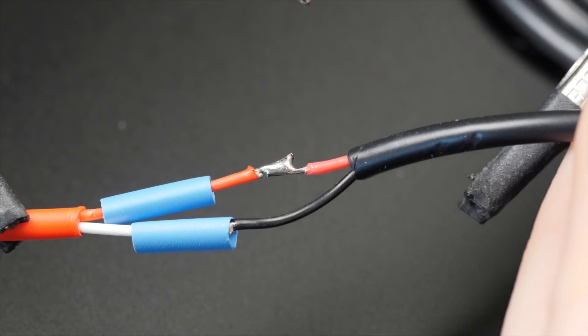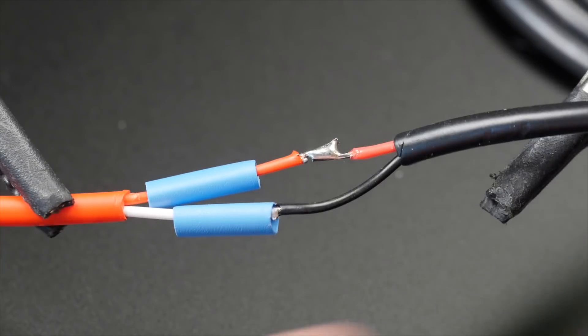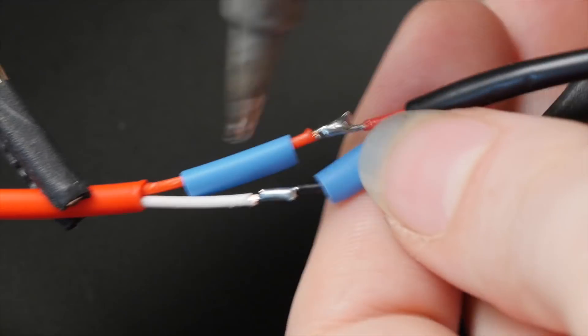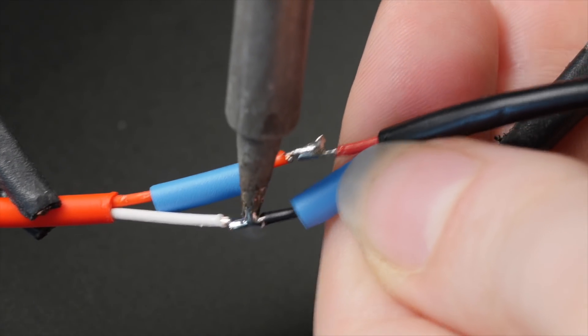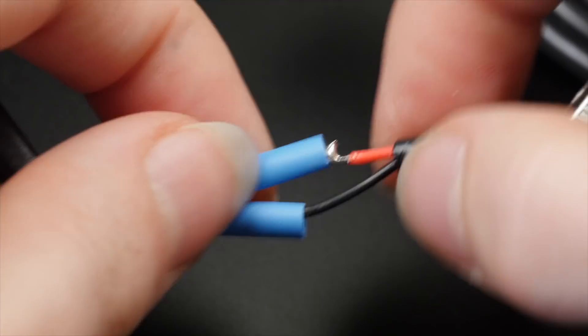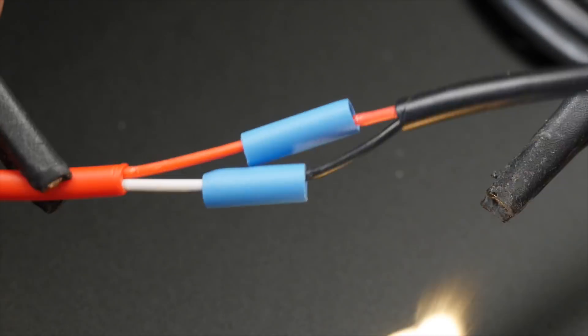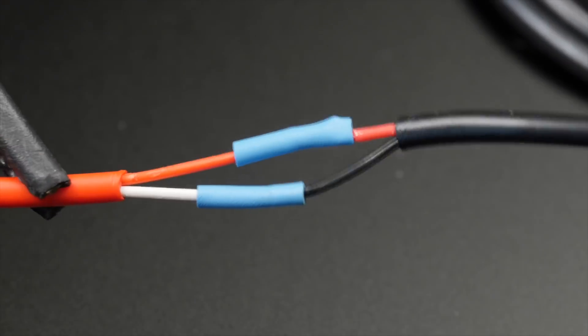Don't forget the heat-shrink tubing before tinning and soldering the wires together. If they don't turn out exactly the same, you can reheat the longer one to adjust. Shrink up the inner and outer layers of heat-shrink tubing and enjoy.